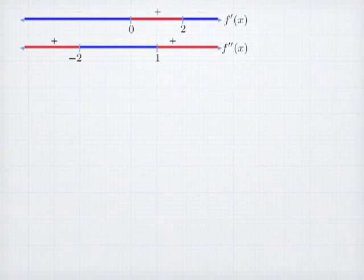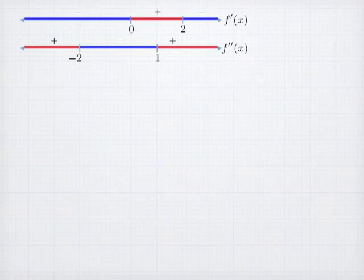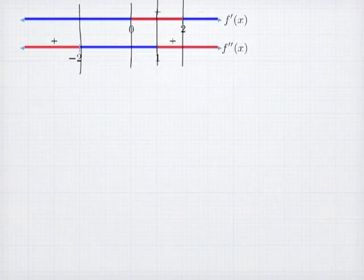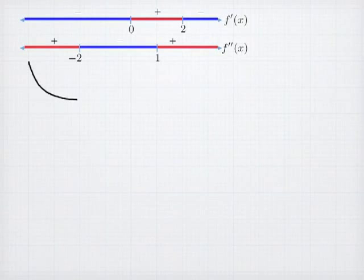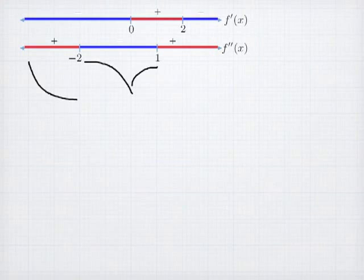For my third example, I have the same sign analyses as the previous example except I've switched the number lines for f prime and f double prime. I want to illustrate problems that can come if you randomly put down sign analyses. Looking at the regions, I again have five different shapes to join together: decreasing and concave up, followed by decreasing and concave down, then increasing and concave down, then increasing and concave up, and finally decreasing and concave up.